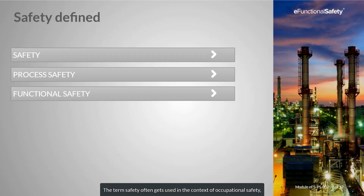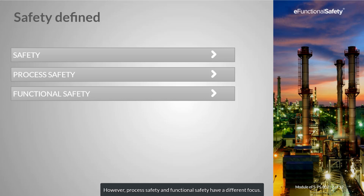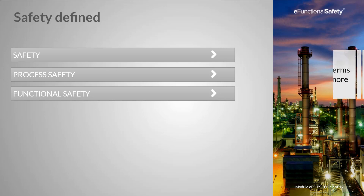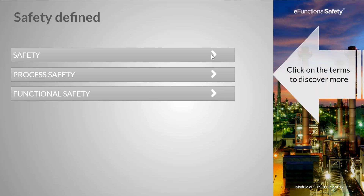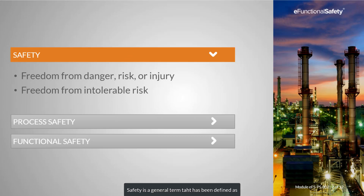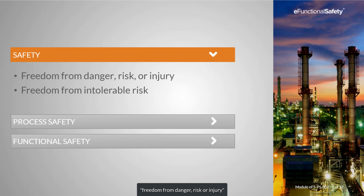The term safety often gets used in the context of occupational safety, namely slips, trips and falls. However, process safety and functional safety have a different focus. Safety is a general term that has been defined as freedom from danger, risk or injury, or freedom from intolerable risk. It's the condition of being protected from harm or any other event which could be considered undesirable.